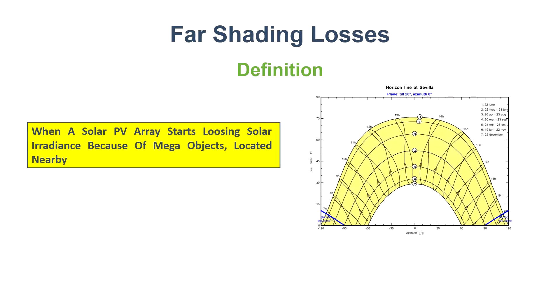So in such events when a solar PV array starts losing solar irradiance because of mega objects in a range of 5 to 15 kilometers distance approach, such losses in PV system is known as far shading loss.